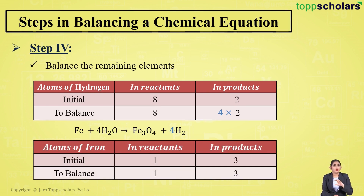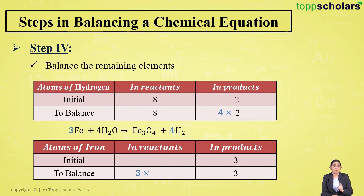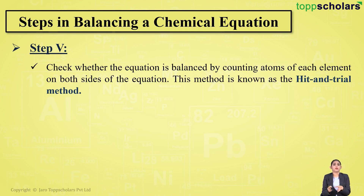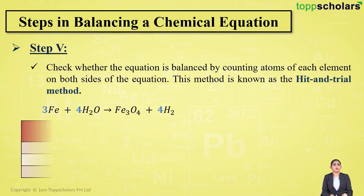Now the hydrogen atoms are balanced — eight on each side. Next, balance iron: one atom on the reactant side versus three on the product side. Add coefficient three to iron on the reactant side, making three iron atoms on both sides. This method of balancing by trying different coefficients is known as the hit-and-trial method.